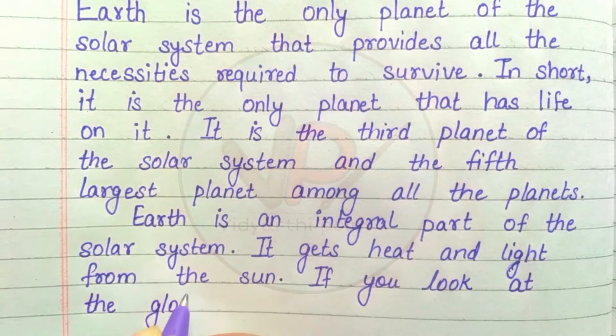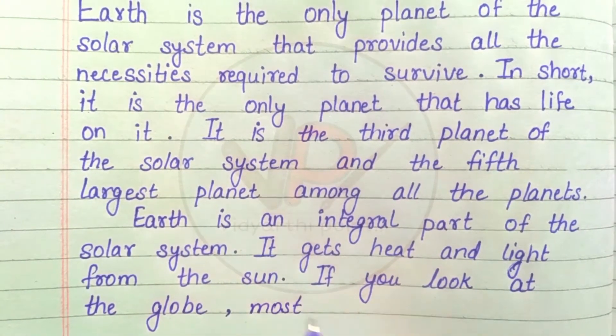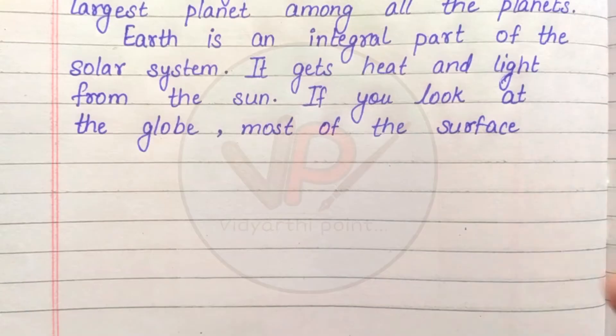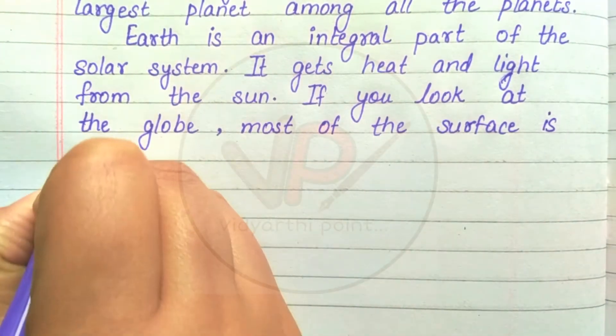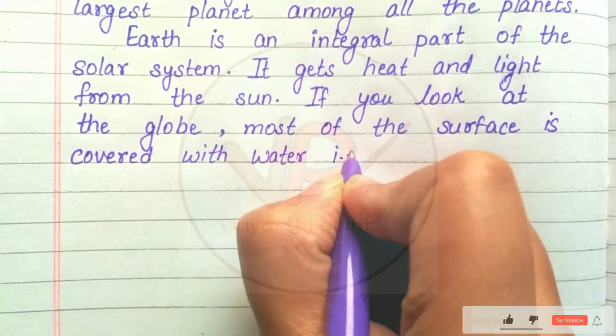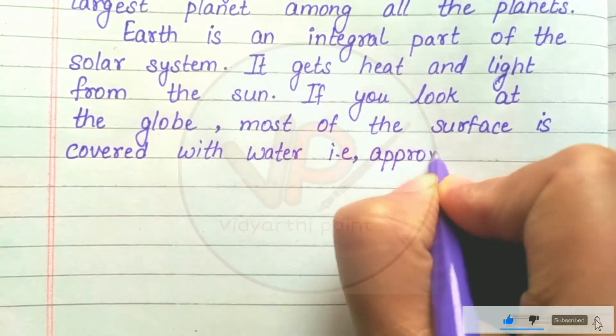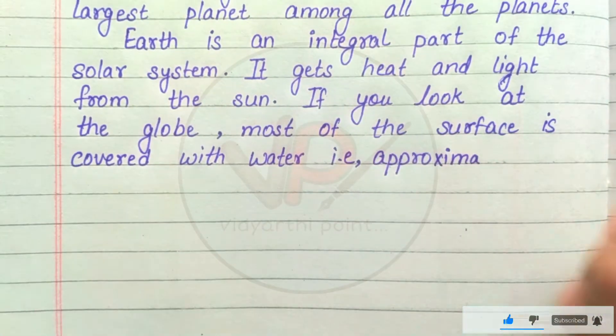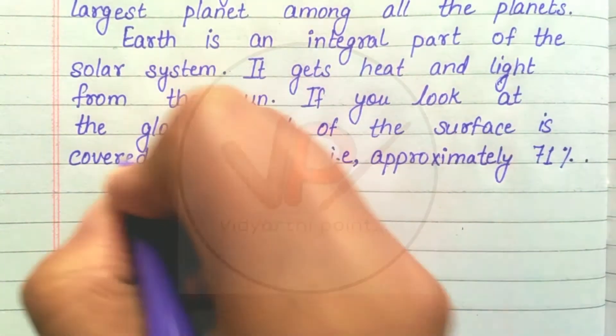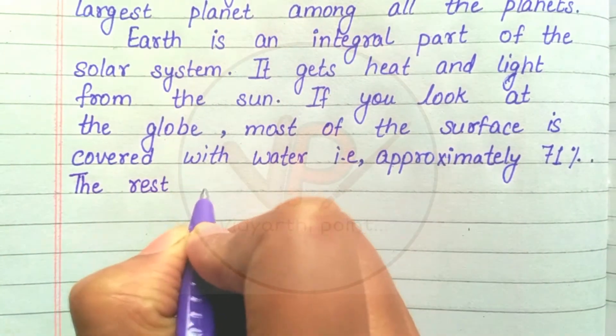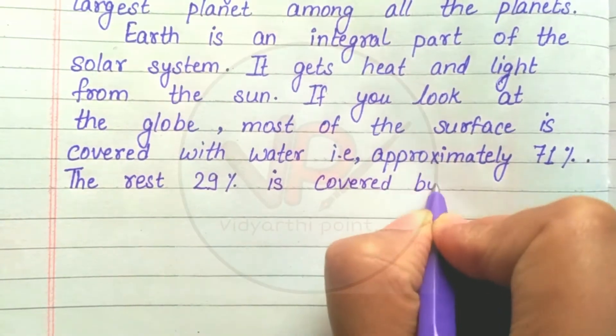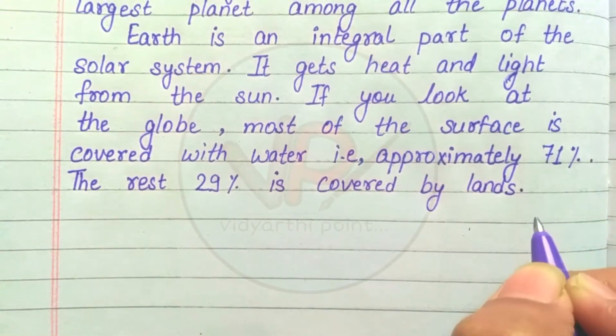If you look at the globe, most of the surface is covered with water, that is approximately 71%. The rest, 29%, is covered by lands.